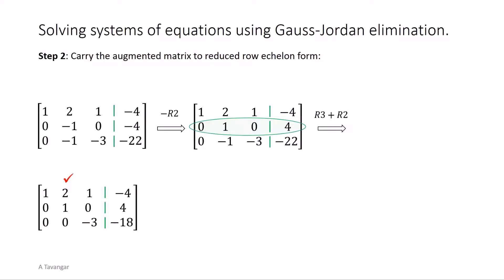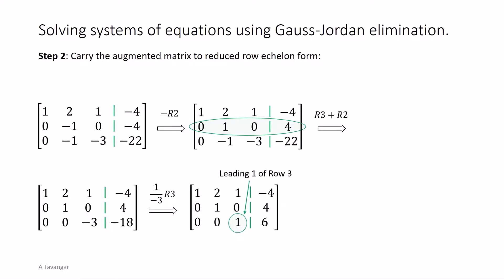Then we move to the third column. Negative three is the leading entry of row three. We need to make it one by multiplying the third row by one over negative three. This is the leading one of row three. This completes the work on column three. Note that the resulting matrix has a staircase form, meaning that the leading entry of all three rows are one and they proceed down and to the right through the matrix. Also all entries below and to the left of the leading ones are zero. The matrix in such a form is called row echelon form.